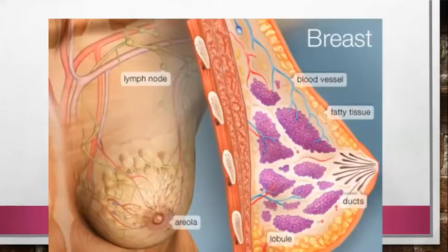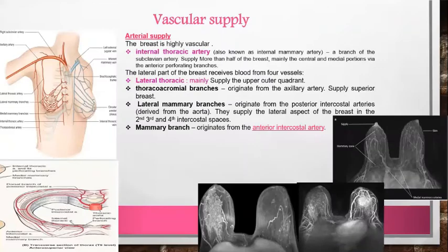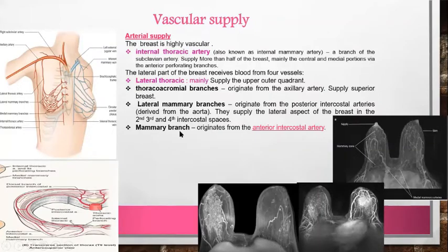Like other structures, the breast has blood vessels, lymphatics, and nerves. The nerve supply is from the intercostal nerves, but the secretory function is not controlled by nerve supply — it is controlled by hypothalamic-pituitary-gonadal hormones. Regarding vascular supply, the two major vessels are the internal branches of the internal mammary artery and the lateral thoracic artery from the axillary artery. Other branches include the thoracoacromial artery, the lateral mammary branch, and the mammary branch of the intercostal arteries.